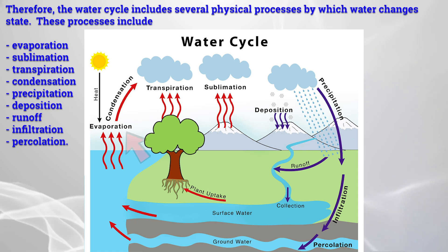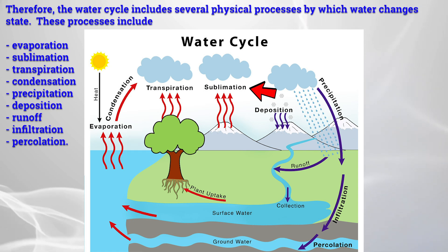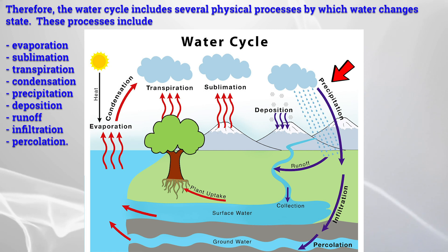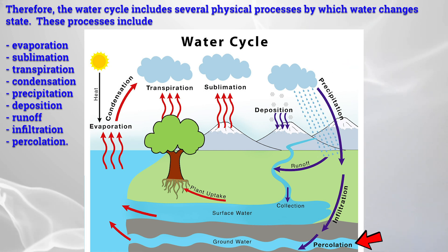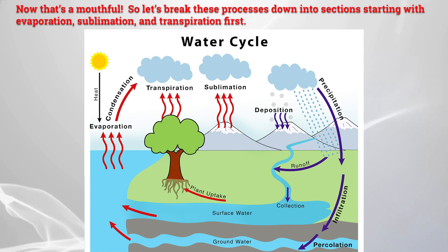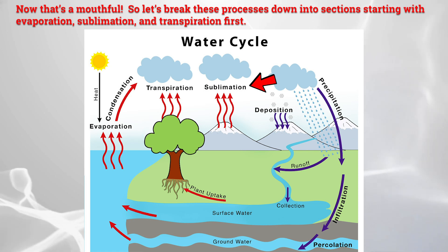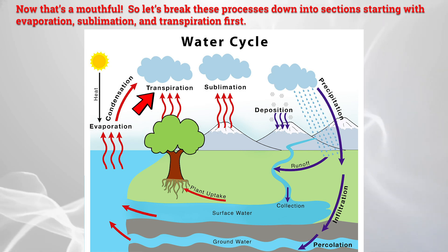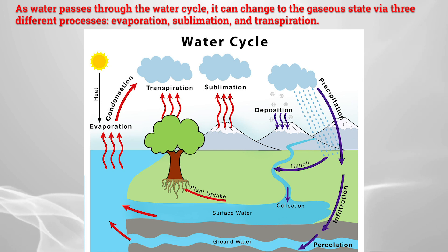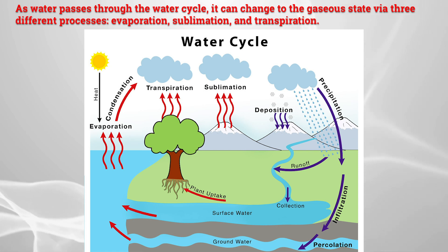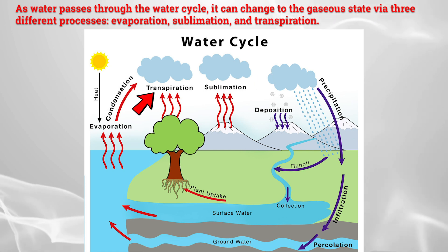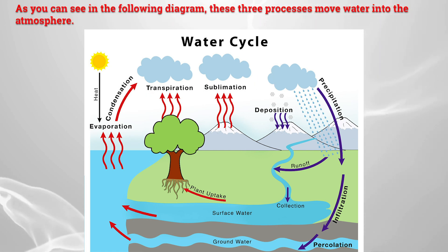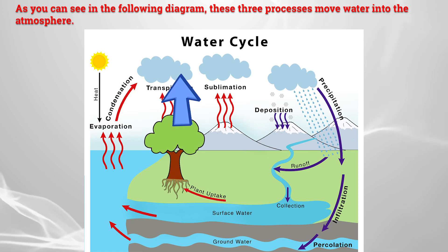These processes include evaporation, sublimation, transpiration, condensation, precipitation, deposition, runoff, infiltration, and percolation. Now that's a mouthful, so let's break these processes down into sections, starting with evaporation, sublimation, and transpiration first. As water passes through the water cycle, it can change to the gaseous state via three different processes: evaporation, sublimation, and transpiration. As you can see in the following diagram, these three processes move water into the atmosphere.